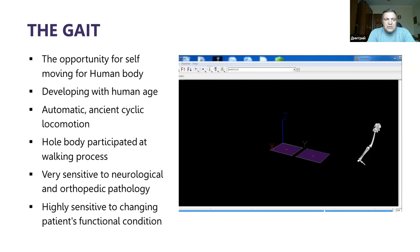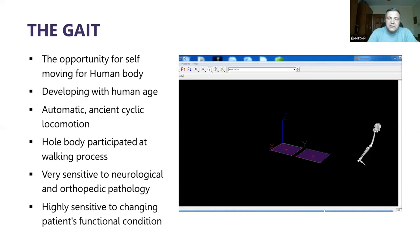The walking process is very sensitive to neurological and orthopedic pathology because the whole musculoskeletal system participates in it, and the central and peripheral nervous system manages this process. It is also highly sensitive to changes in a patient's functional condition — meaning a patient could be trained or treated by any methods, and we can get an objective result of how the patient feels in just a few minutes, sometimes a few hours or more.